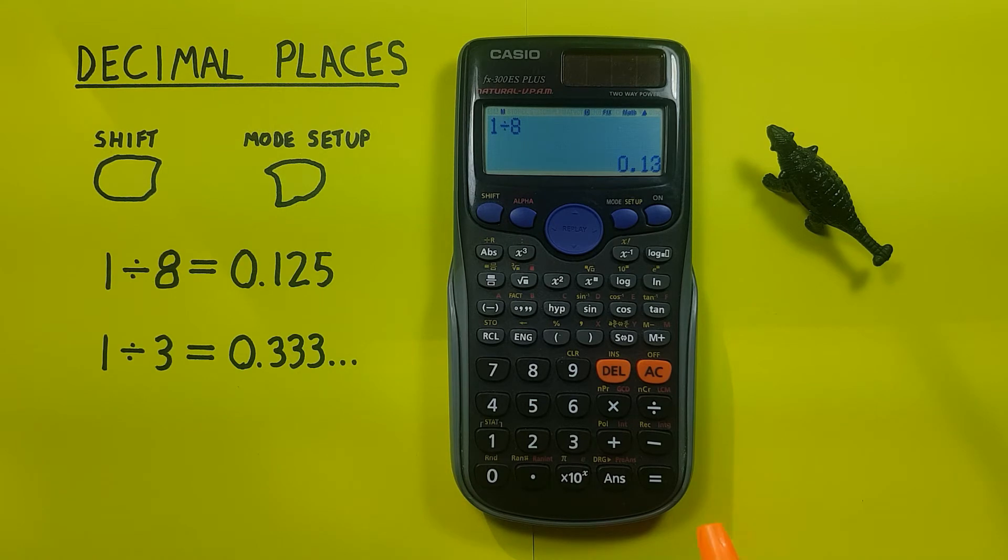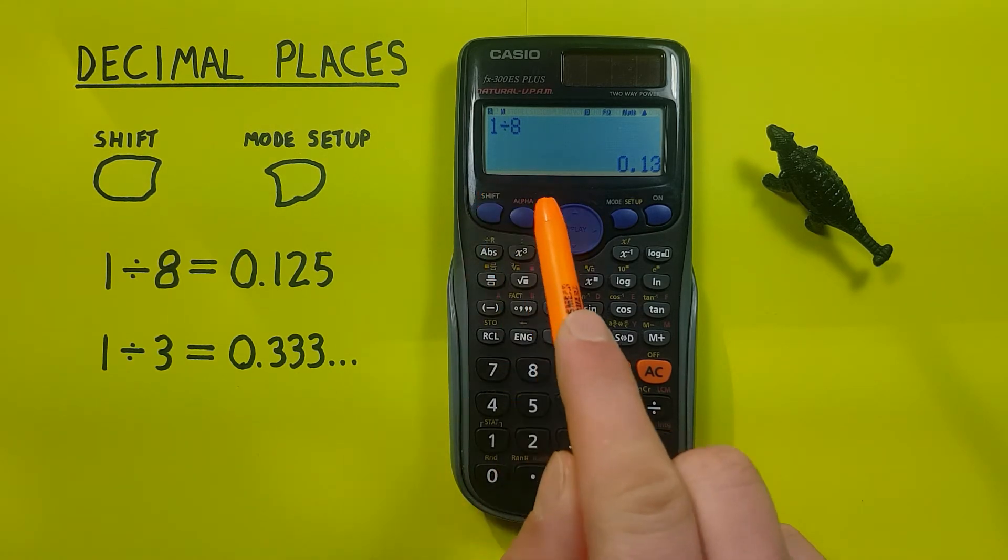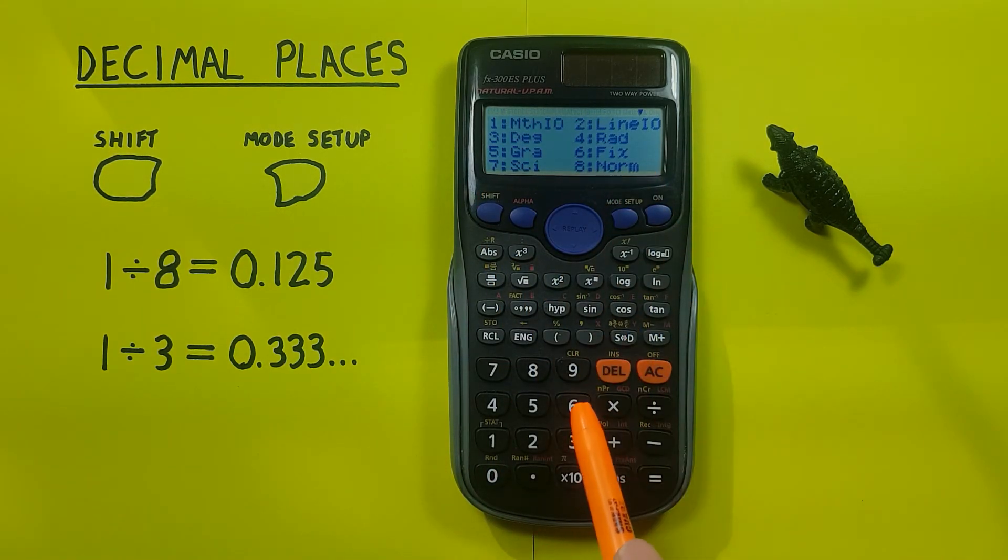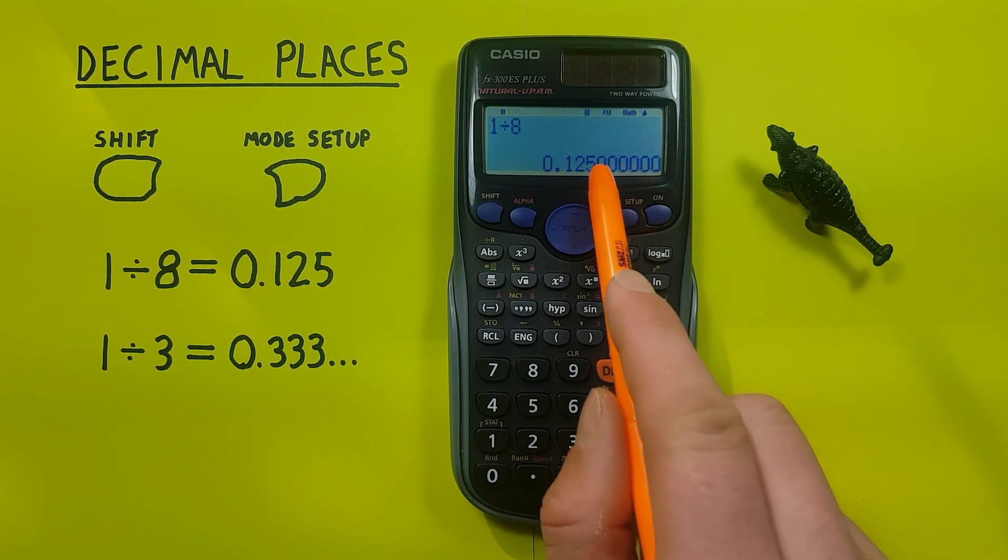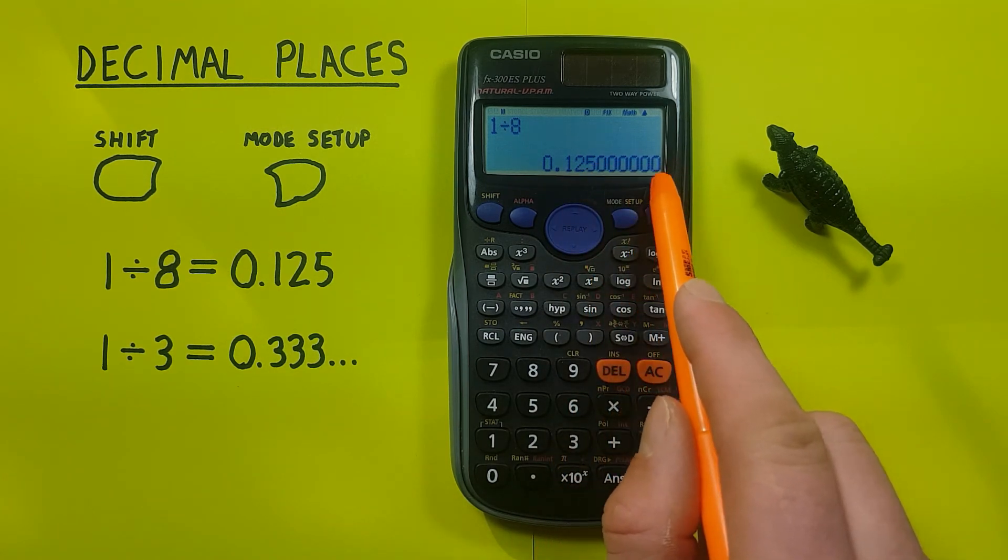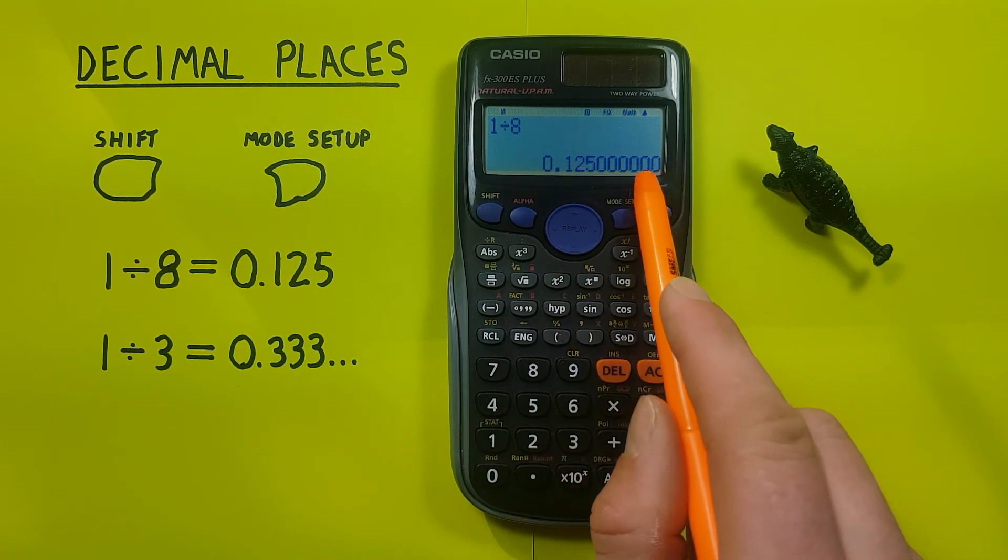We can use up to nine decimal places, so for example if we go shift, mode, fix, and then 9 to decimals, we see we've used nine decimal places here. Even though we don't actually have numbers to go into them, it'll still display all the decimal places.